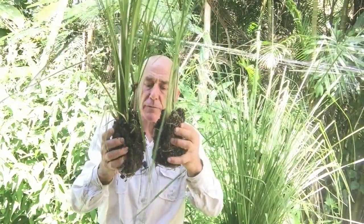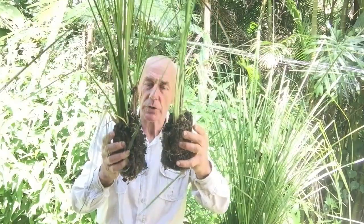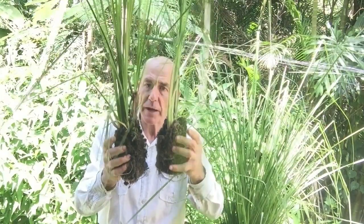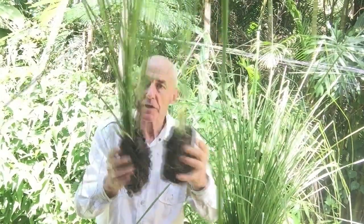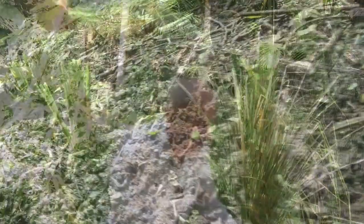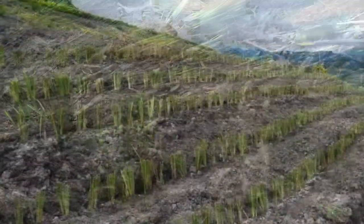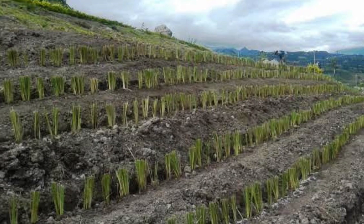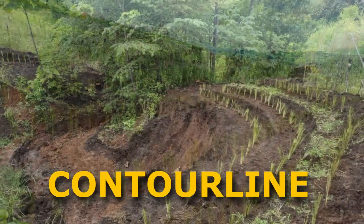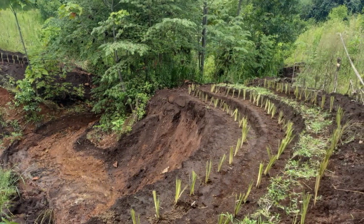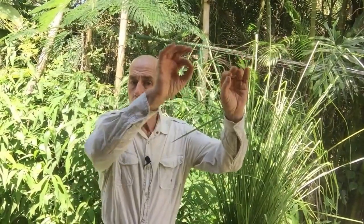Vetiver grass can be planted very close to each other and forms a very tough barrier in a very short time. And here we have the second step: plant vetiver on the contour line. But some of you may not be familiar with the concept of contour lines — I'll explain it.